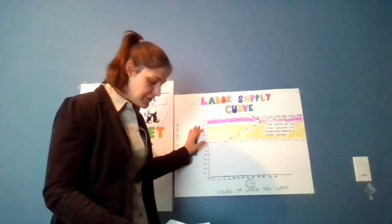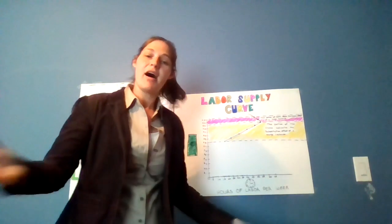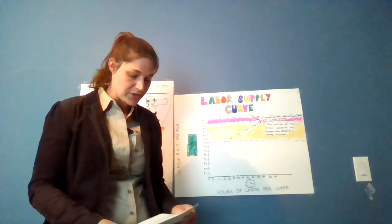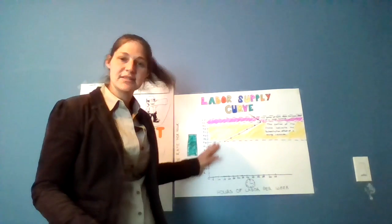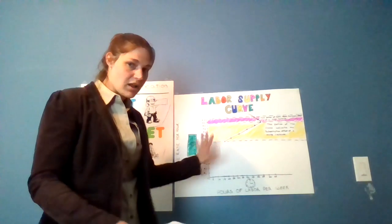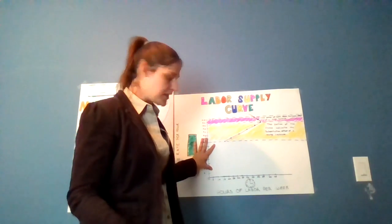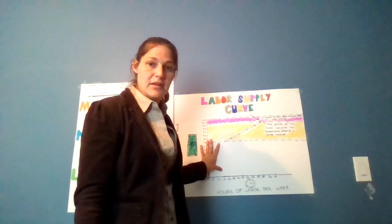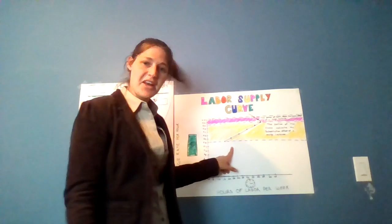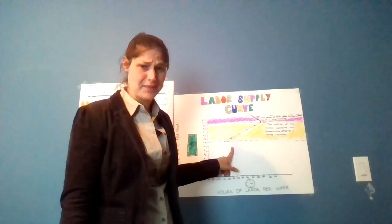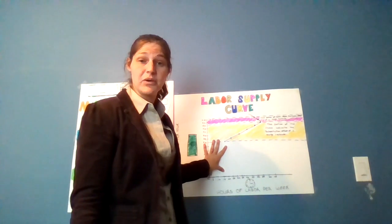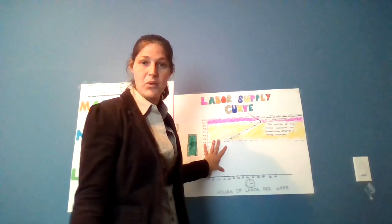When looking at labor supply individually, we look at wages per hour. If you were off on summer break and you wanted to know whether or not you should get a job, all other things constant and it's a normal job — it's just all about money. You're determining whether or not you should substitute your leisure time and your non-market work time with market work time. At $7 an hour, it's not worth your time to go to work, so you would not substitute any market work for the other two activities, because you just get more out of the other two.